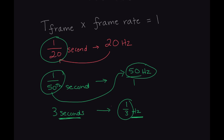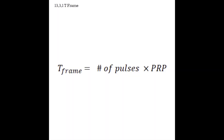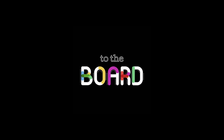We also have a second formula that shows how the time to make one frame is directly related to the number of pulses to create a frame multiplied by the pulse repetition period (PRP). Remember that PRP is the time it takes for one pulse to travel to the maximum depth and back. Since all factors in this formula are directly related, if number of pulses increases, T-frame increases. If PRP increases, T-frame also increases.